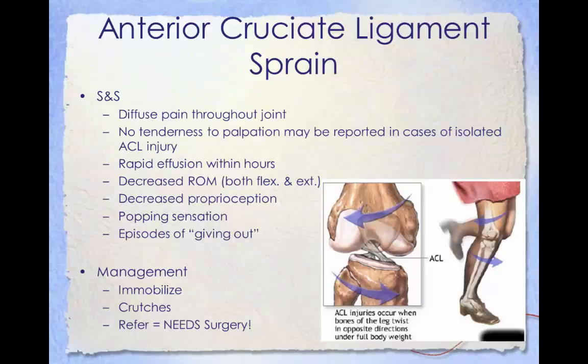Signs and symptoms of ACL injuries include diffuse pain throughout the joint; with an isolated ACL injury the patient may not report tenderness to palpation. Rapid effusion within hours is common, along with decreased range of motion in both flexion and extension, decreased proprioception, and a popping sensation at the time of injury. Patients also complain of episodes of the knee giving out, feeling the joint is unstable. Management should include immediate immobilization and placing the patient on crutches for non-weight bearing. Surgery is needed to restore stability; even with surgery, approximately 80% of repaired ACL injuries will result in osteoarthritis. If not repaired, the patient will likely eventually need a total knee replacement.